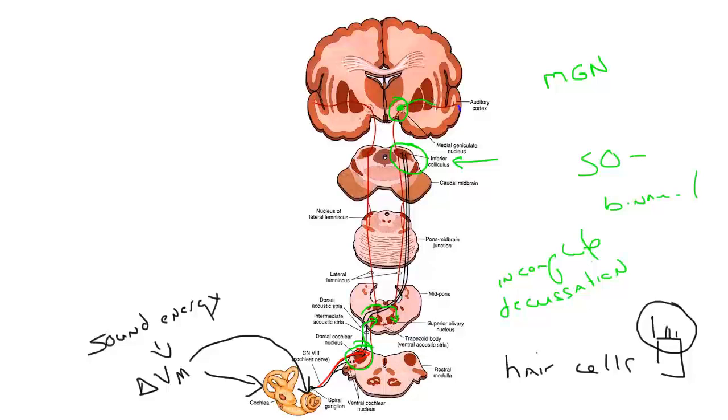Thalamic neurons then give rise to axons that terminate in an area of cortex that is, by definition, an auditory cortex. It's getting input from the medial geniculate. It has to be auditory in function. So, in the auditory cortex, there's a primary area.